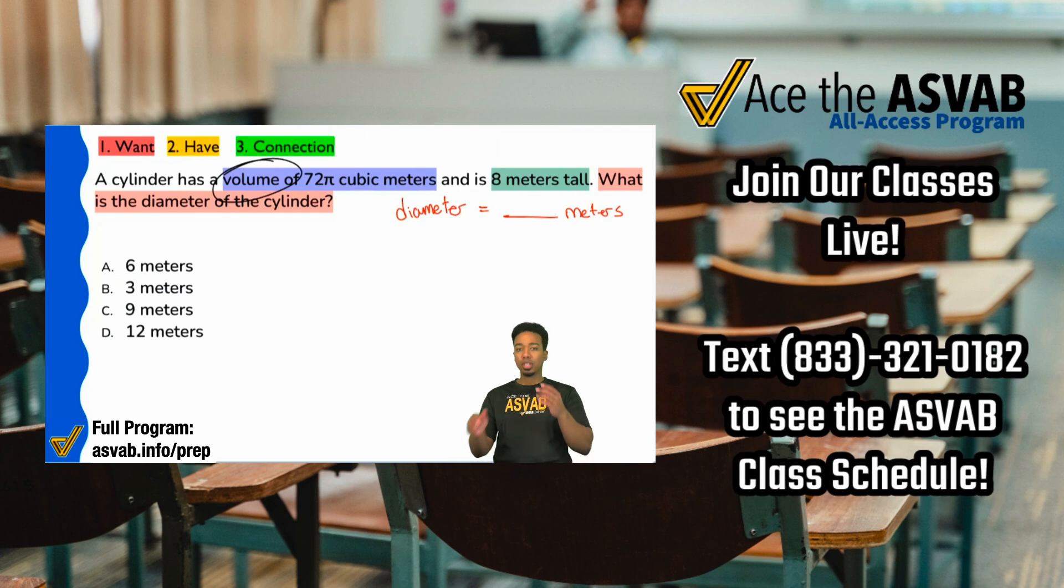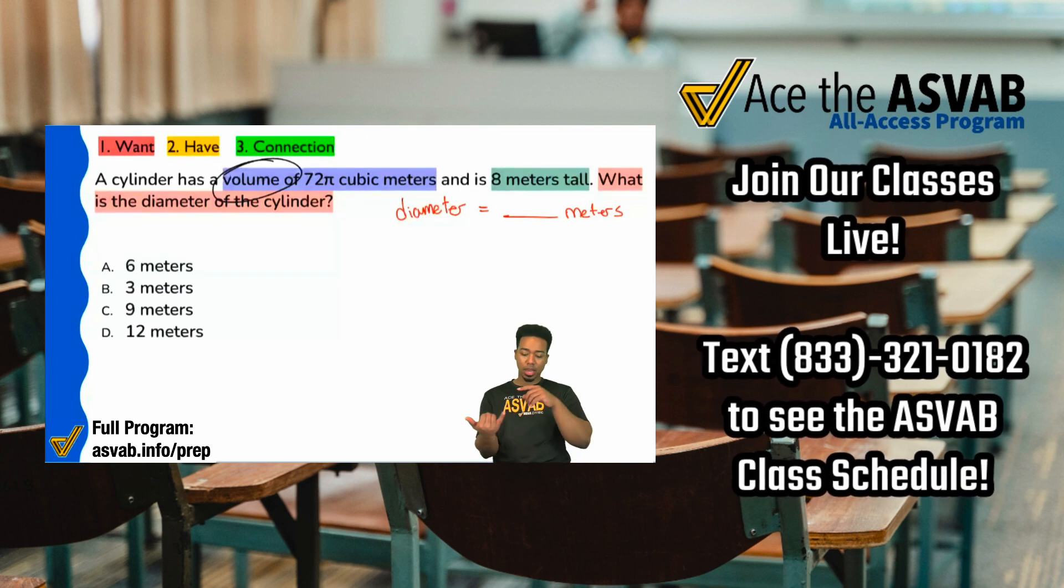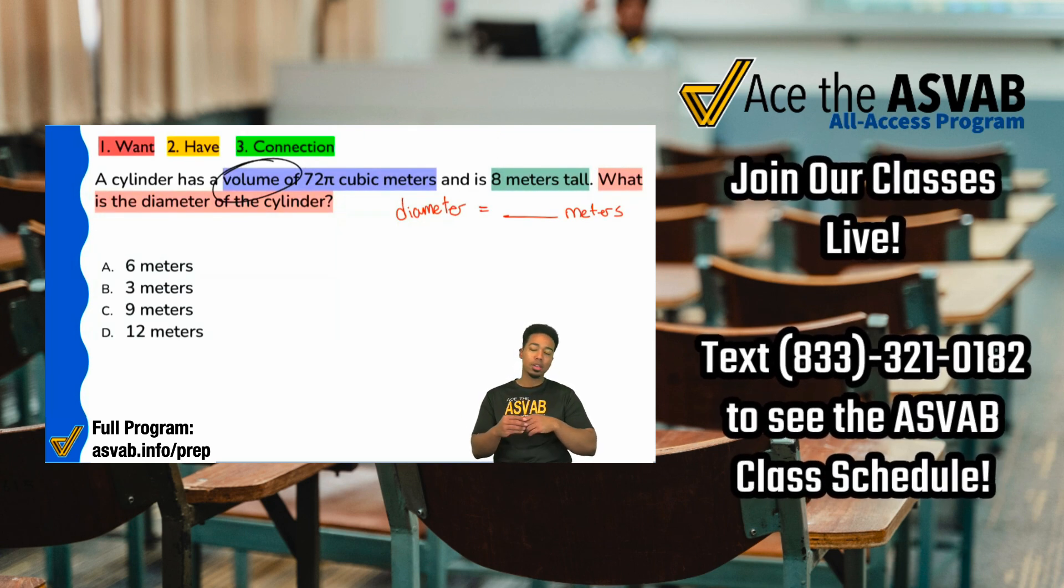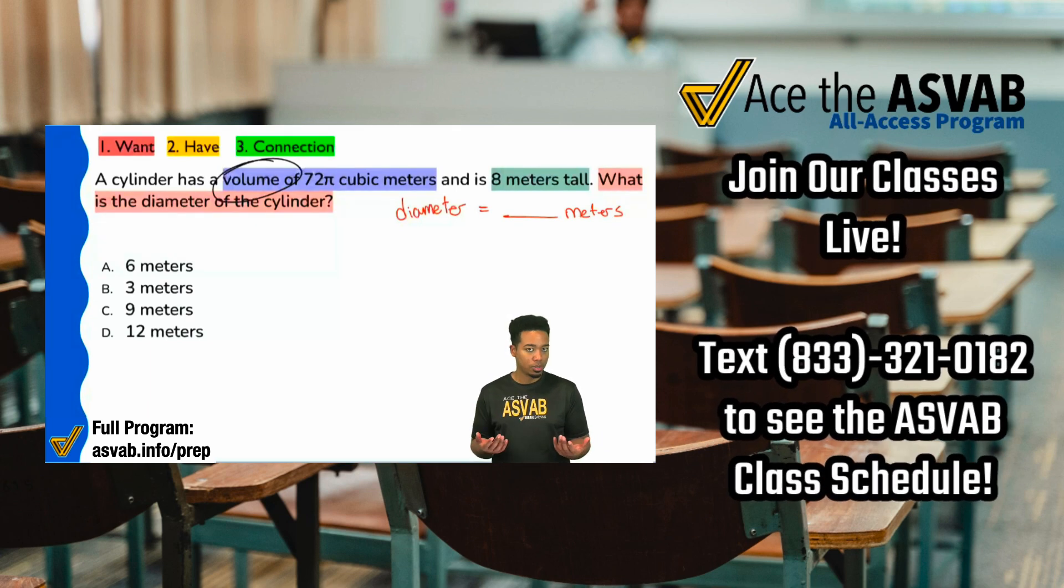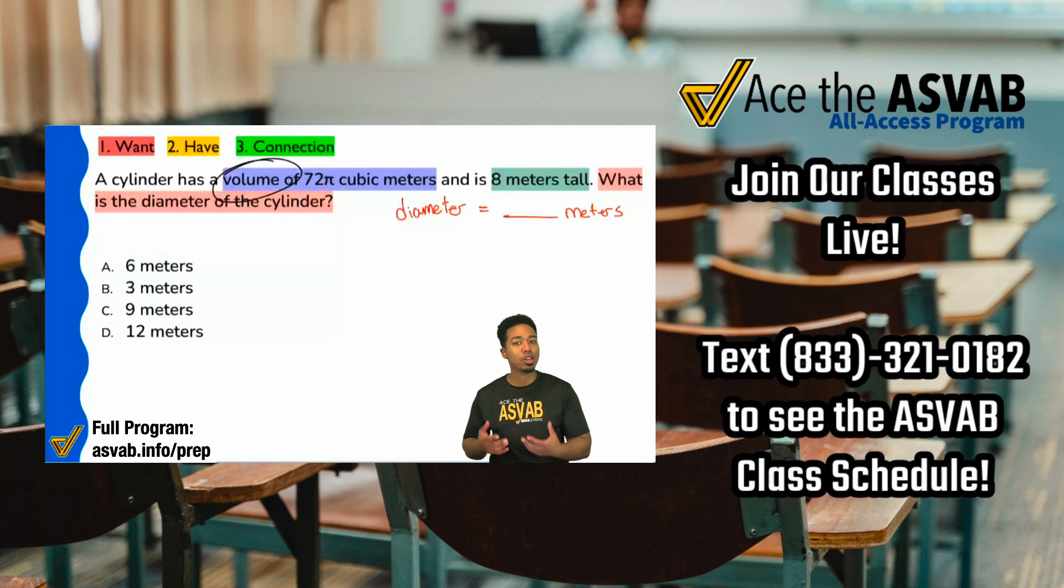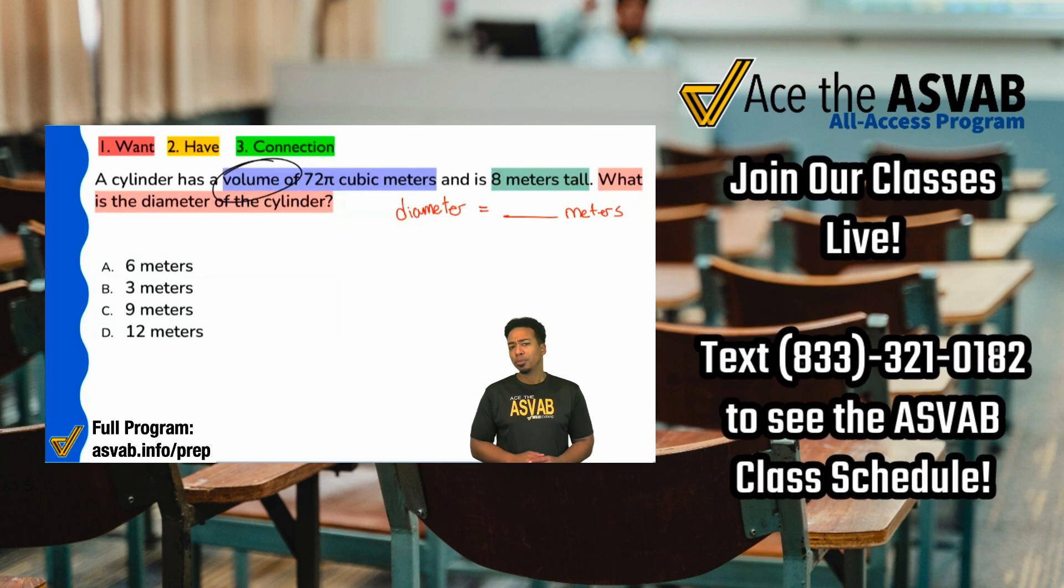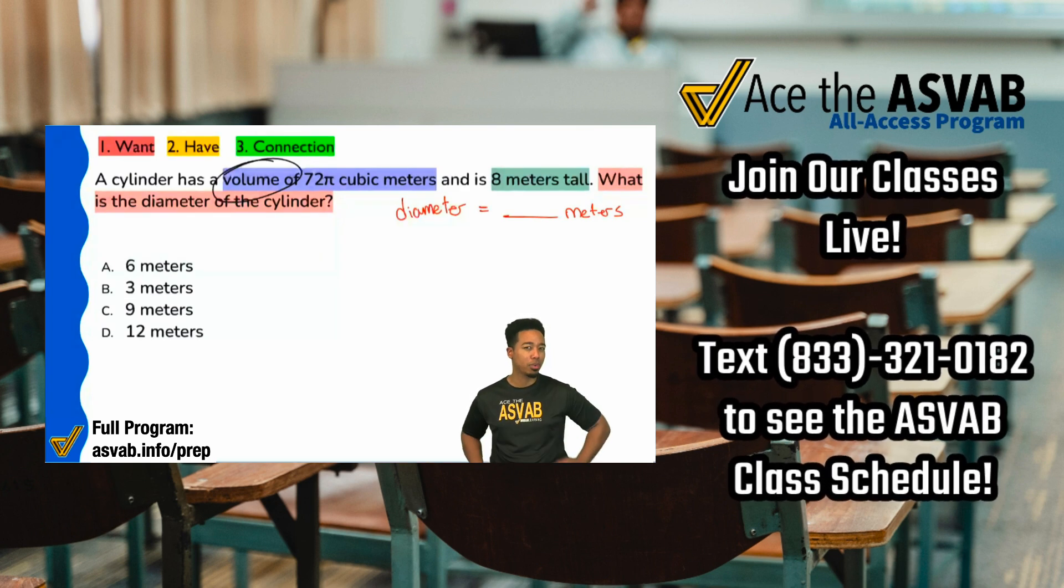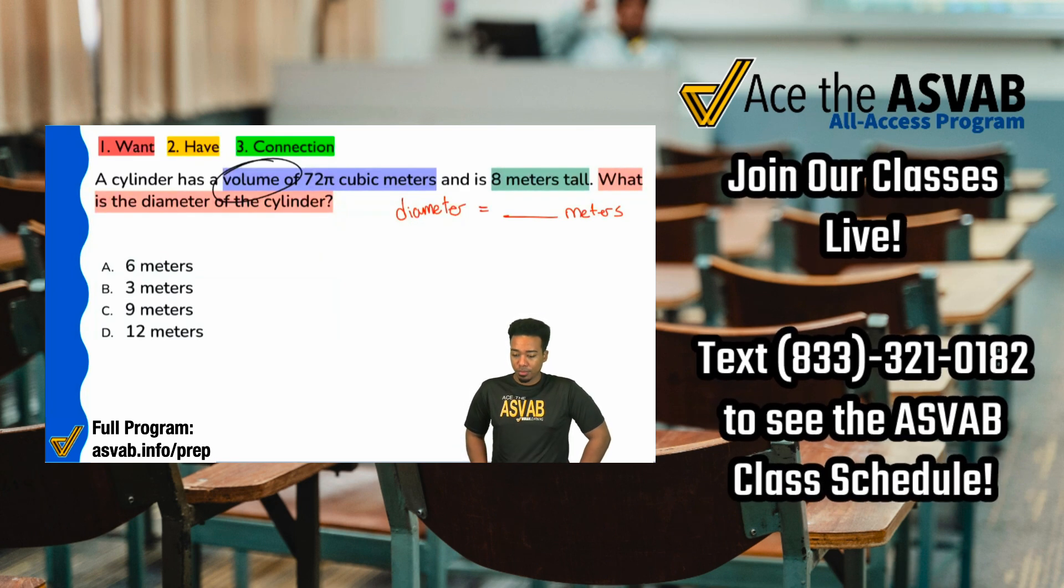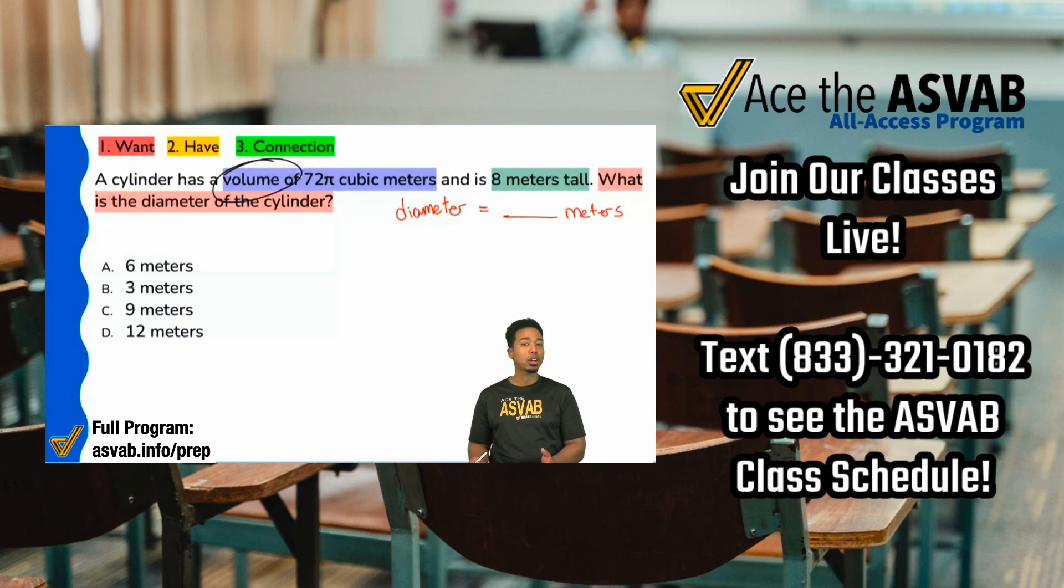When you're given a word as big as that, like area, volume, surface area, circumference, those are formulaic terms. What I mean by that is there's a formula associated with that term. Who here knows what the volume of a cylinder is? What's the formula for that? Delilah, thank you. You were pretty prepared there. Pi times r squared times h.